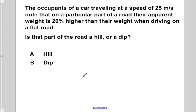The occupants of a car traveling at a speed of 25 meters per second note that on a particular part of the road, their apparent weight is 20% higher than their weight when driving on a flat road. Is that part of the road a hill or a dip?